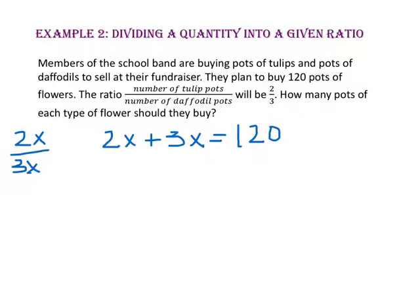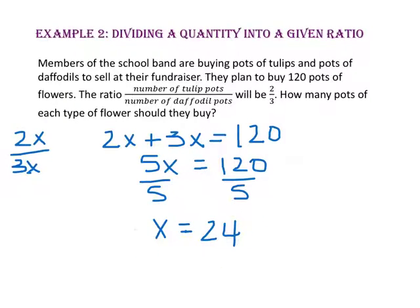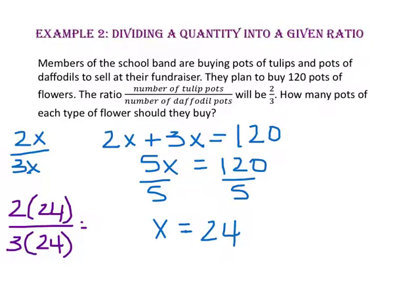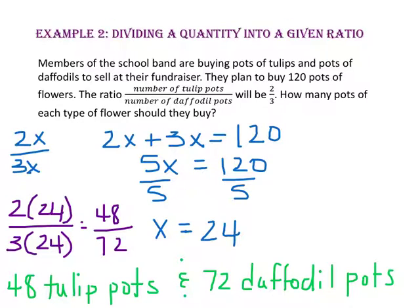Now let's solve for x. 2x plus 3x equals 5x, and that will equal 120. Divide both sides by 5 and x equals 24. Since x equals 24, the number of tulip pots will be 2 times 24 and the number of daffodil pots will be 3 times 24. So there will be 48 tulip pots and 72 daffodil pots. To check, let's add 48 to 72, and since we get 120 pots, we know that we are correct.